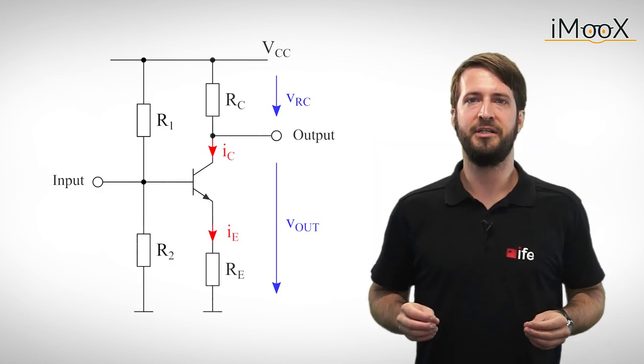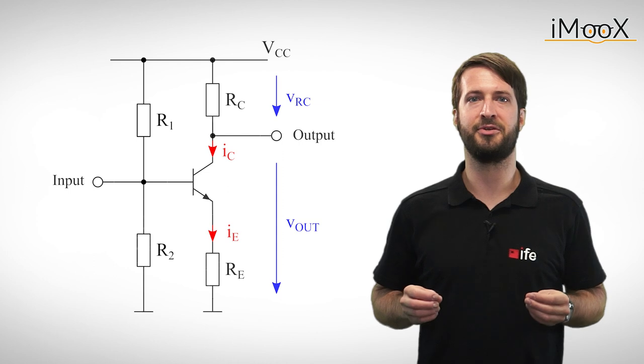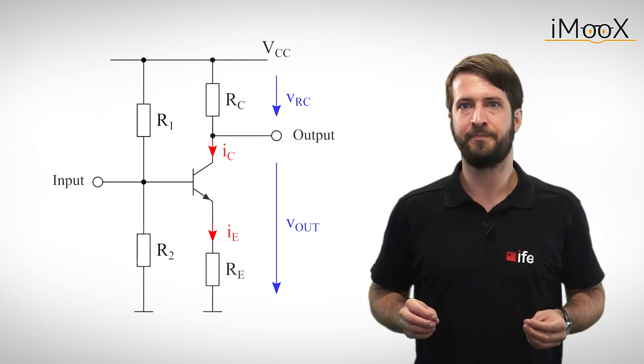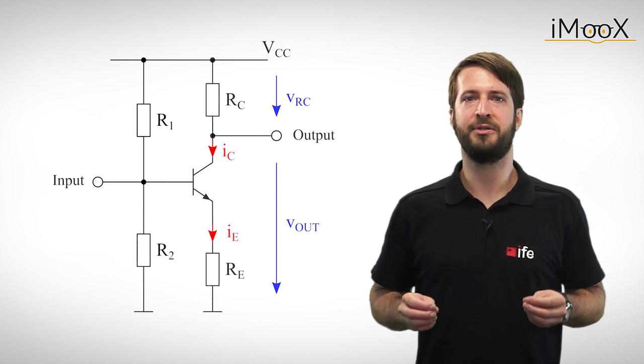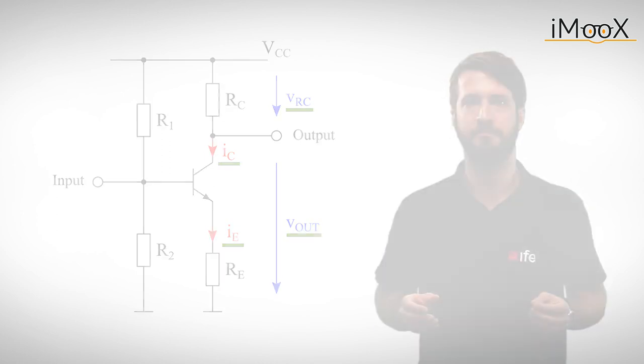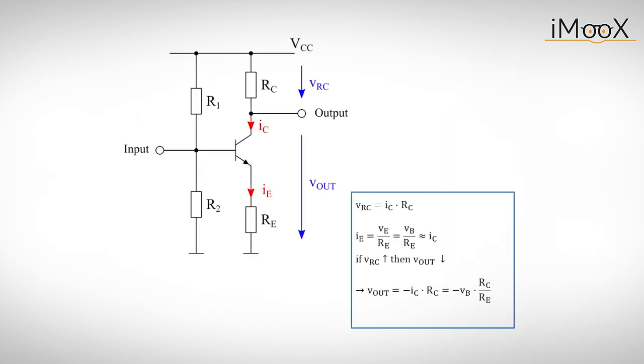We now only want to consider the alternating values of the circuit, since the signals we want to amplify are AC signals. It is common to describe the alternating values with small letters. If we look at the output voltage, we can see that the rise in IC causes an increasing voltage drop at the resistor RC, and therefore a decreasing voltage at the output.